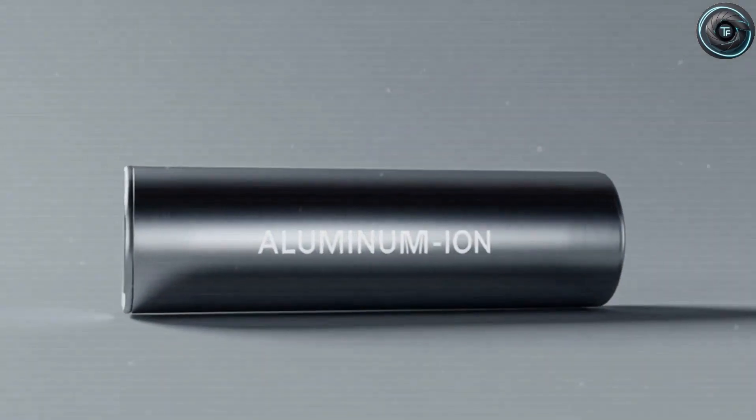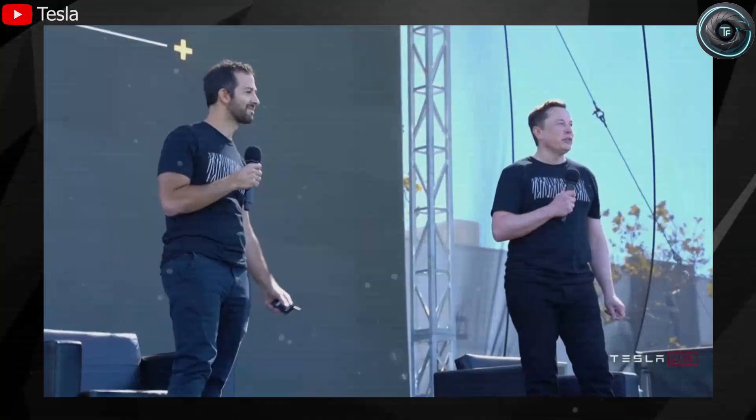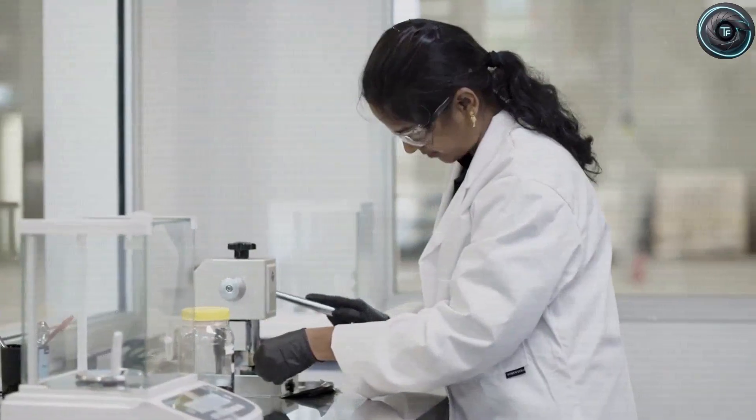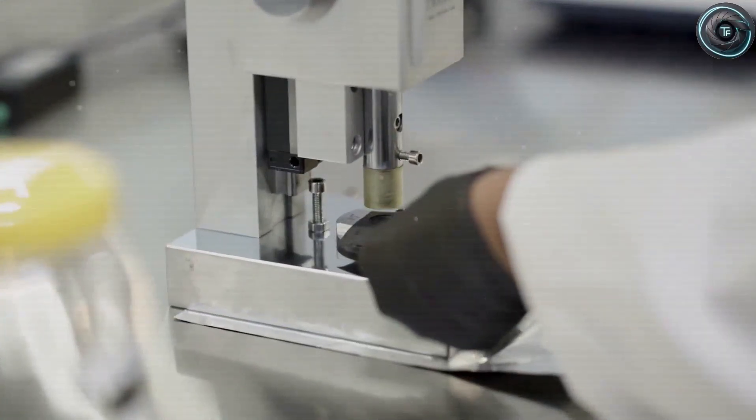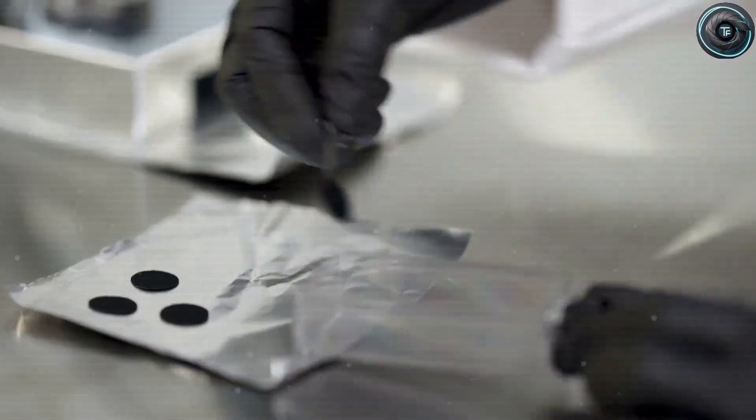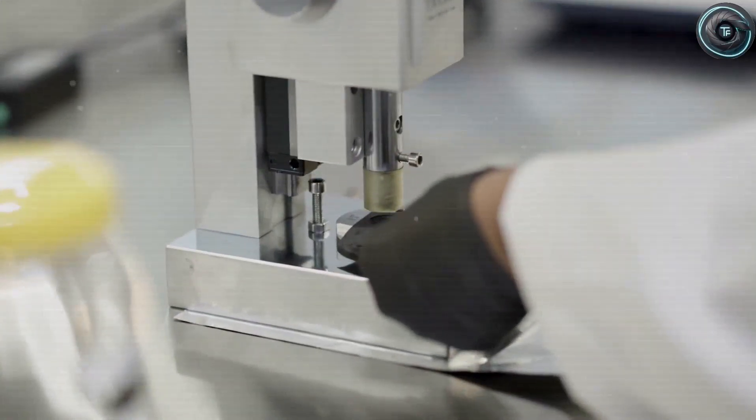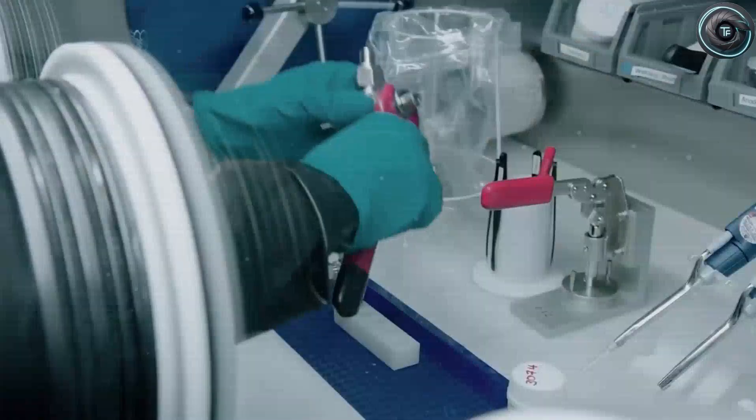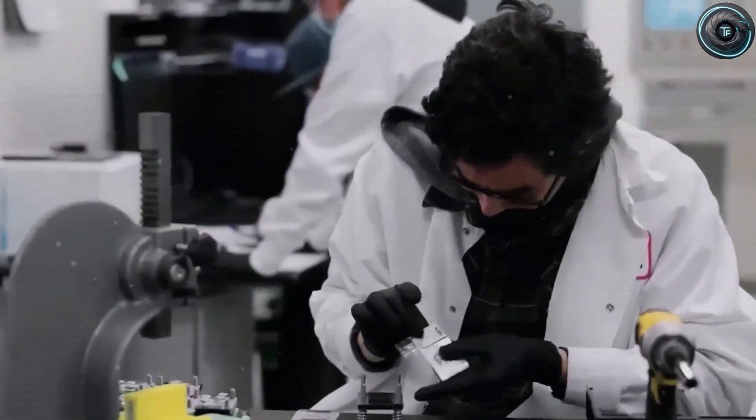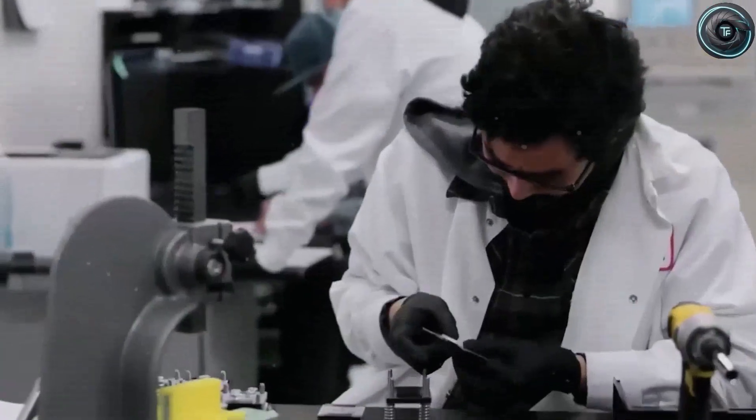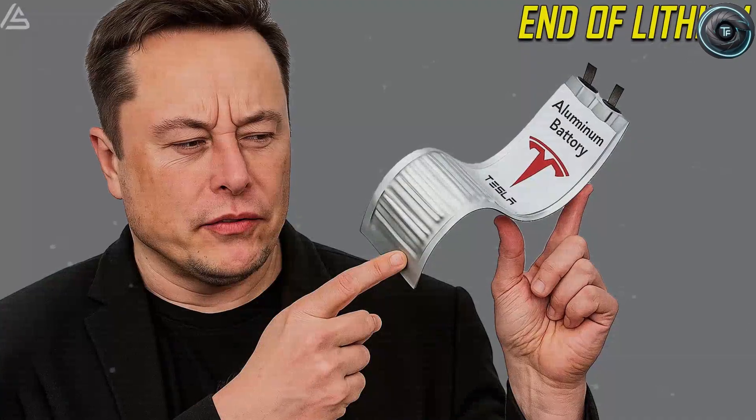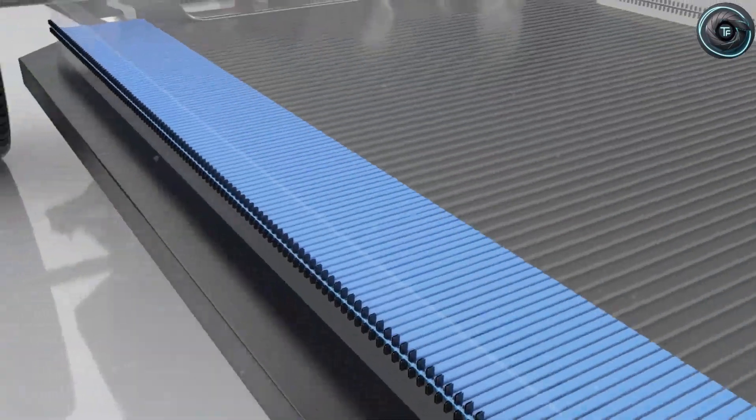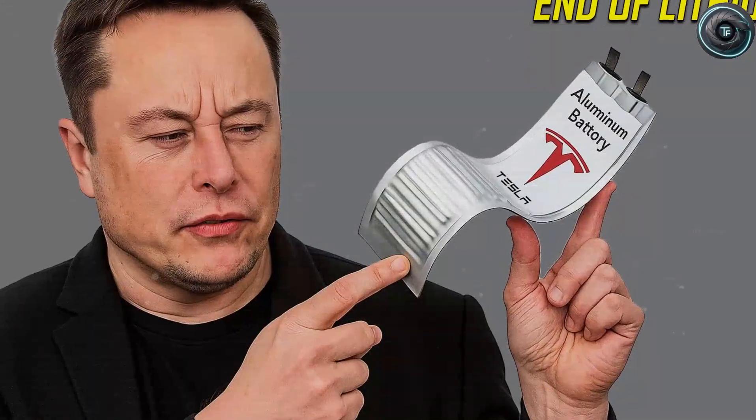When you think of Tesla, you think of innovation. But tonight, Tesla quietly dropped something that could change every idea we have about electric cars. Deep inside the company's research facilities, engineers have taken the next major leap in their aluminum-ion battery project. The results are so shocking that even insiders are calling it the real start of the next energy era. Forget everything you've heard about five-minute charging and million-mile batteries for a moment, because what's happening now is bigger, smarter, and faster than anything we've seen in the last three decades of battery development.